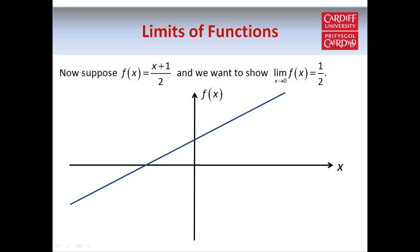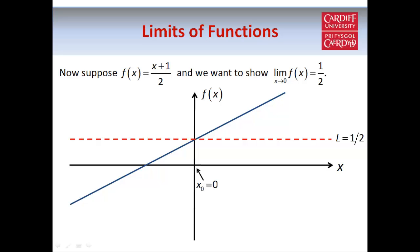Here's our function, and obviously it's just a straight line, and we know that it's going to cross the vertical axis at a half, but we want to actually prove that using the limit definition. So our value of L is a half, and our value of x₀ is 0, because we want to look at the limit as x approaches 0.